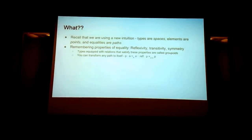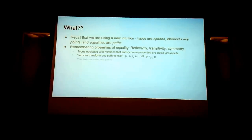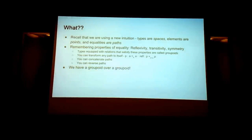You can transform any path to itself: if you have a path of A equals A, then you also have the reflexivity constructor of that path, so P equals P. You can also compose paths and reverse paths. That means we have groupoids over groupoids.